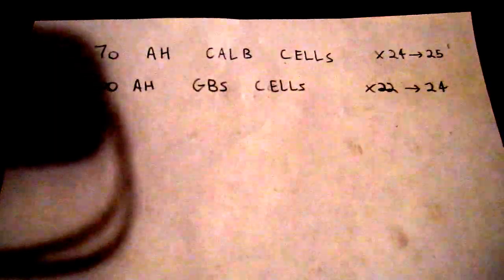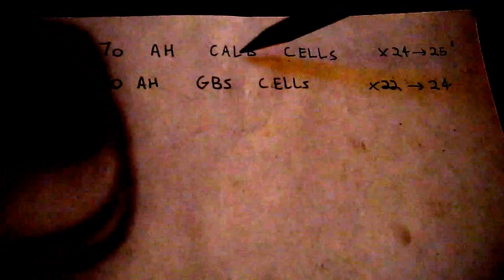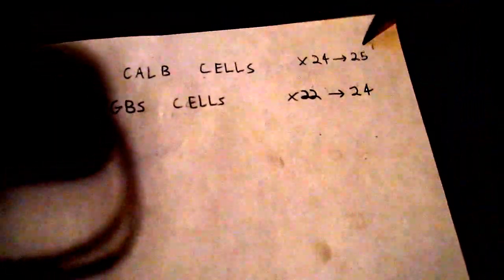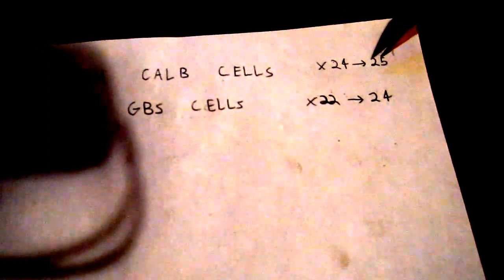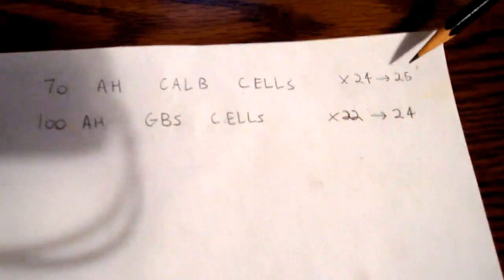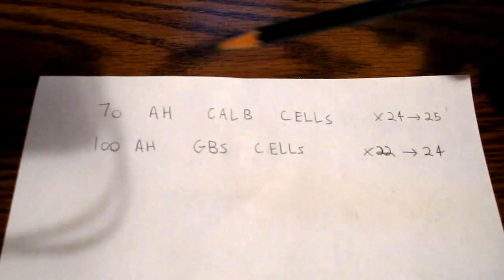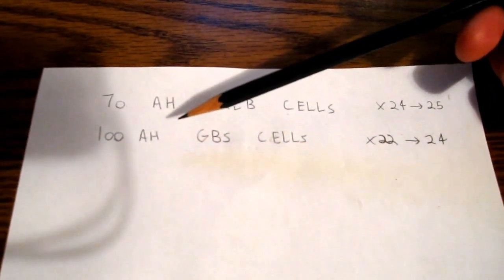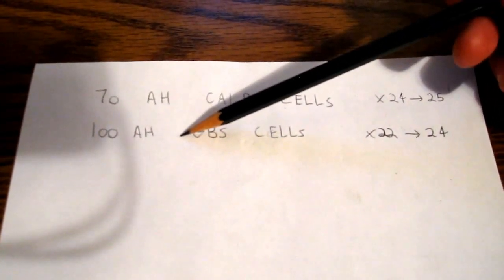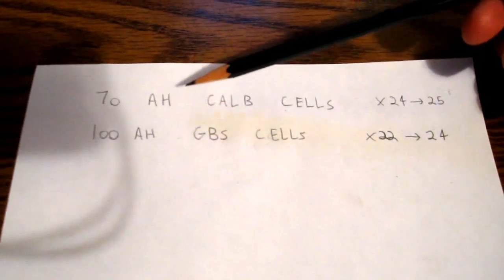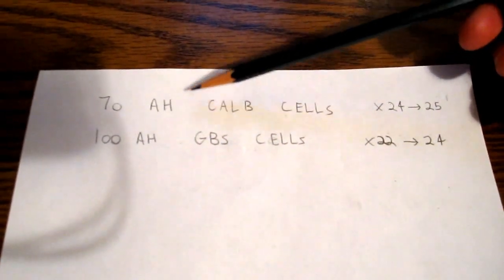Right now I'm hoping for the CALB cells actually because the voltage will be higher so the motor will spin a little faster. That would be nice. But the GBS cells would hold more energy. This would be about 7 kilowatt hours and this would be 5.6 kilowatt hours.